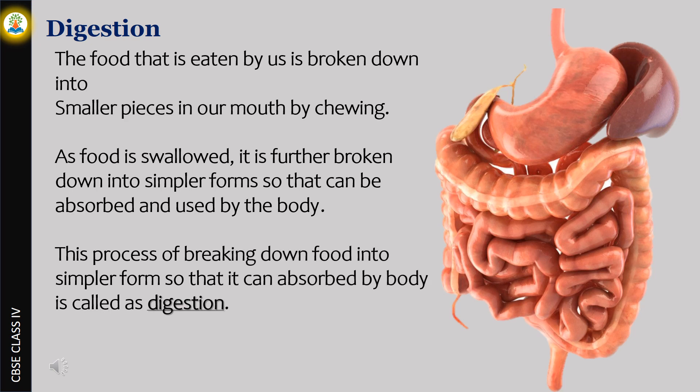The food that is eaten by us is broken down into smaller pieces in our mouth by chewing. As food is swallowed, it is further broken down into simpler forms so that it can be absorbed and used by the body. This process of breaking down food into simpler forms so that it can be absorbed by the body is called digestion.